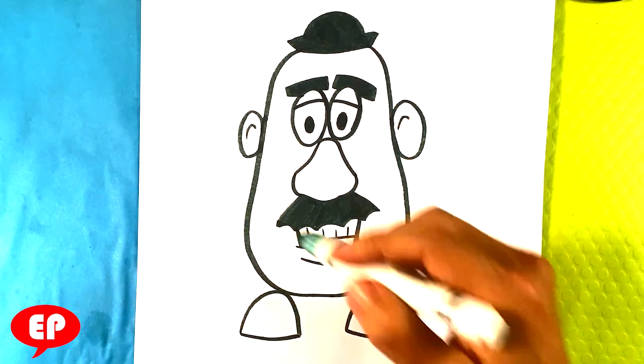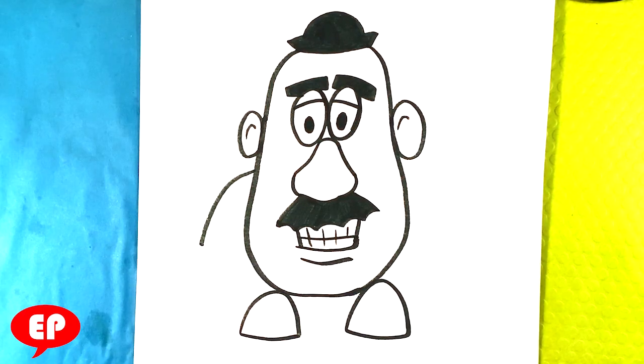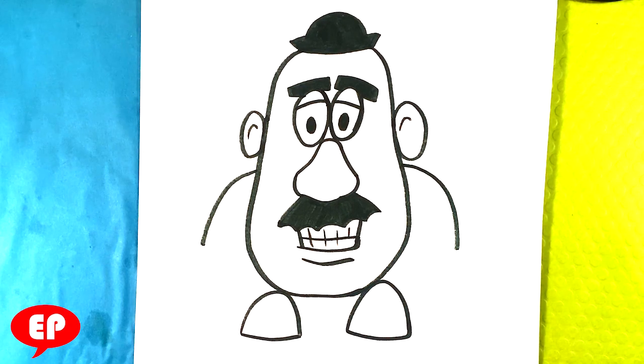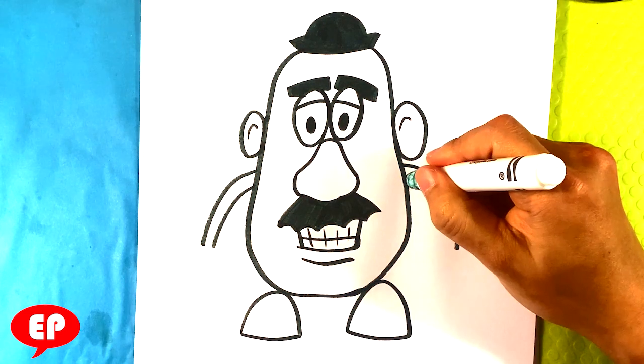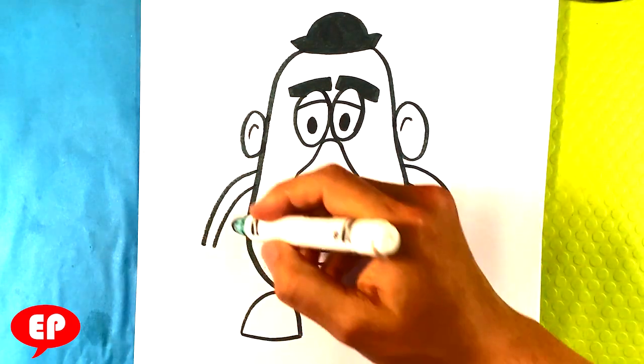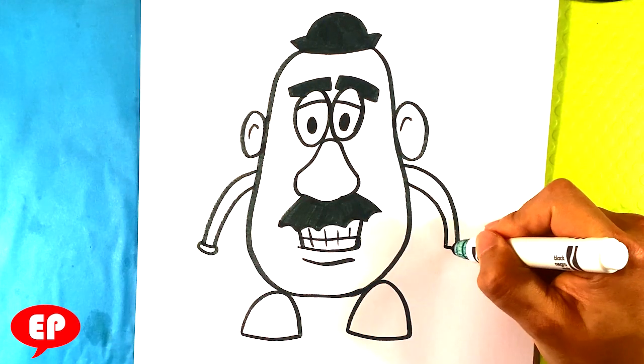And then lastly the arms. Line out here, line out here. It's got tube-like arms. Tube-like arms. Line out here, line out.